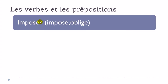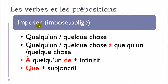Verbe suivant: imposer. Imposer quelqu'un, imposer quelque chose — pas de préposition. Imposer quelqu'un ou quelque chose à quelqu'un ou quelque chose. Imposer à quelqu'un de plus infinitif. Imposer que plus subjonctif.